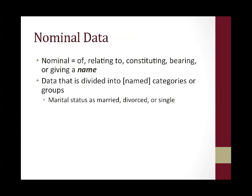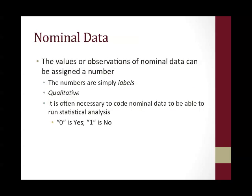Let's first talk about nominal data. The definition of nominal is of, relating to, constituting, bearing, or giving a name. Data that is divided into named categories or groups is considered nominal data. An example would be dividing patients based on their marital status as either married, divorced, or single — these are named categories. The values or observations of nominal data can be assigned a number, but these numbers are just labels and they're qualitative. They're often necessary to code nominal data in order to run statistical analyses — for example, coding yes responses as zero and no responses as one.